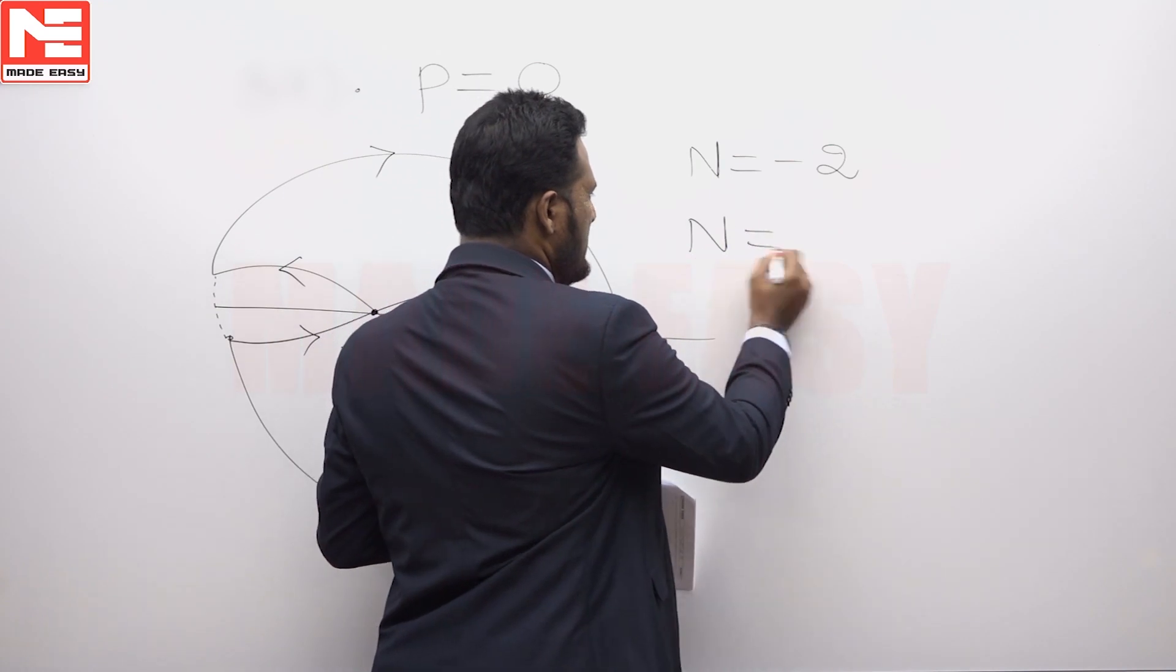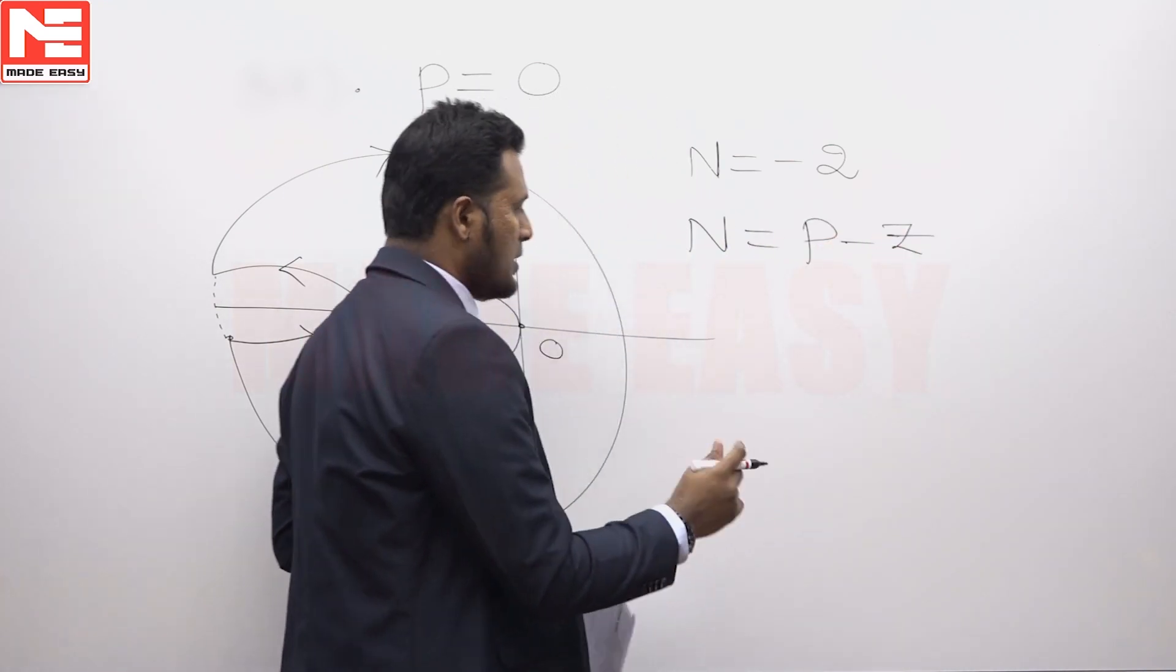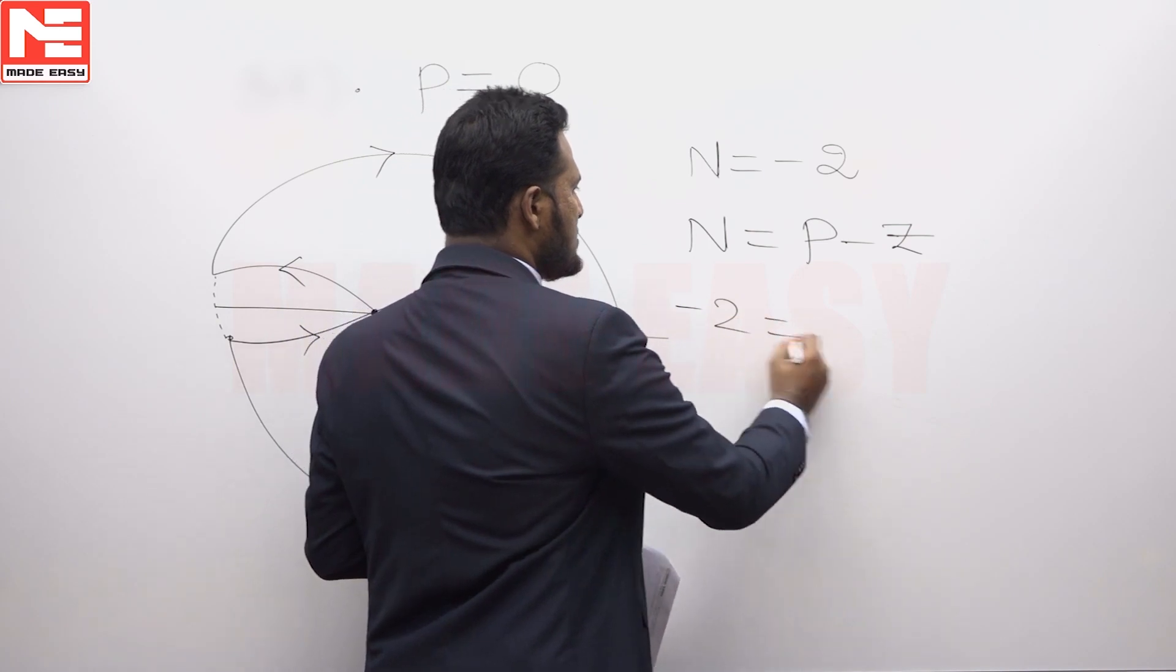N is equal to P minus Z is the argument principle statement. N being minus 2, P 0.